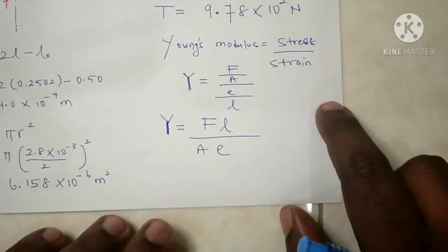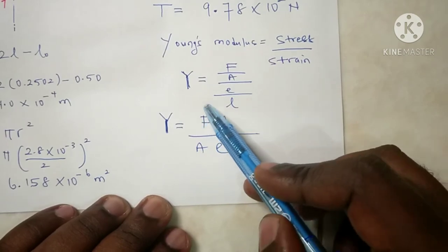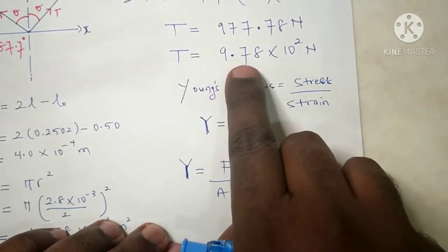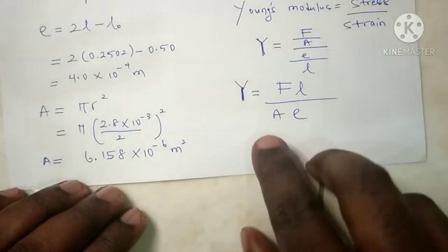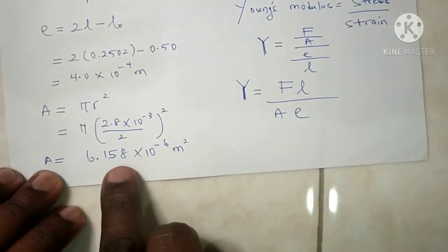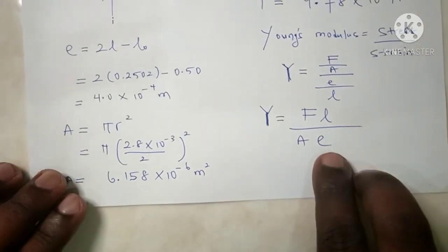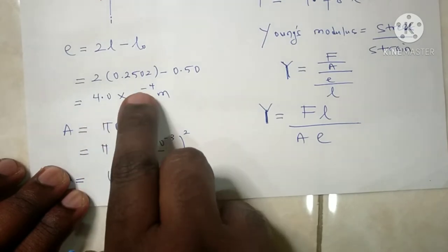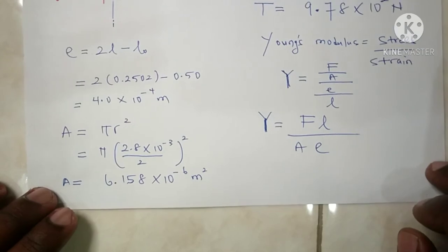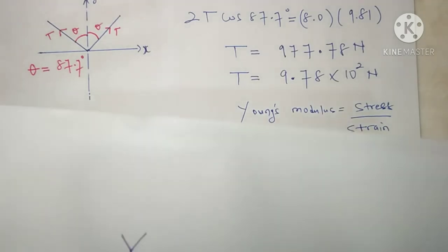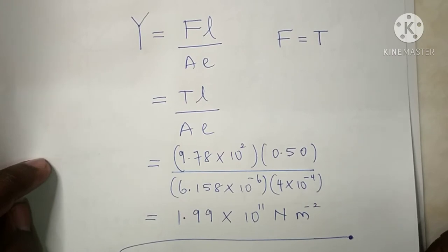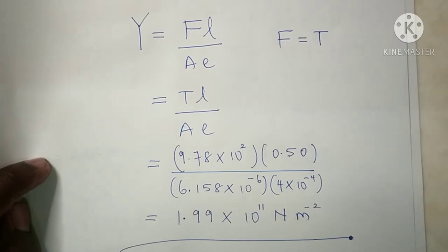We now have all the required values for Young's modulus: force equals tension = 9.78 × 10² N; original length = 0.5 m; cross-sectional area = 6.158 × 10⁻⁶ m²; and extension = 4.0 × 10⁻⁴ m. Substituting all values accordingly into the Young's modulus formula gives a Young's modulus of 1.99 × 10¹¹ N/m².